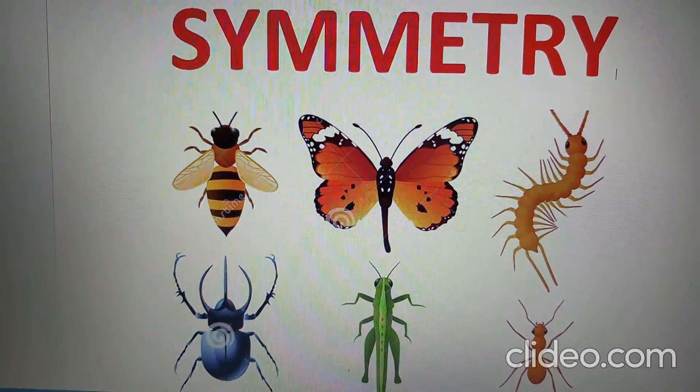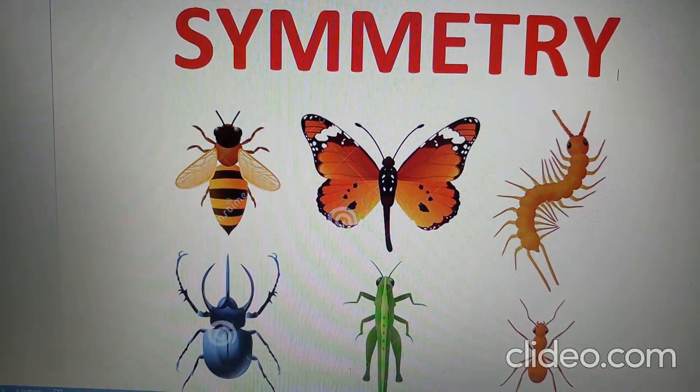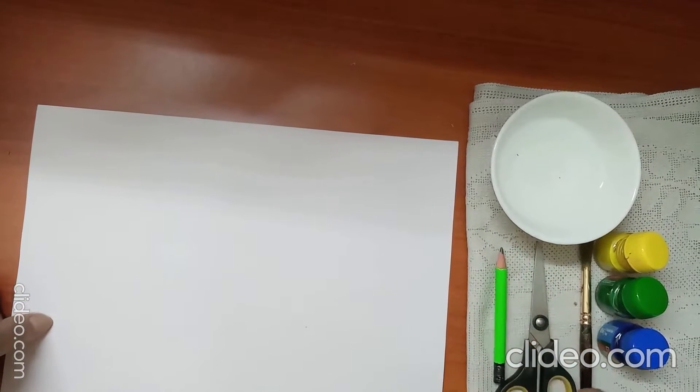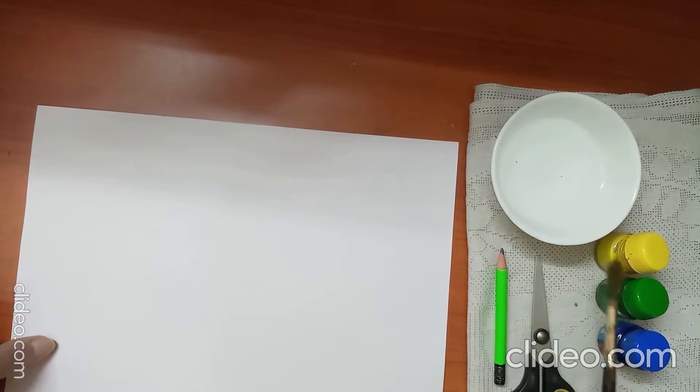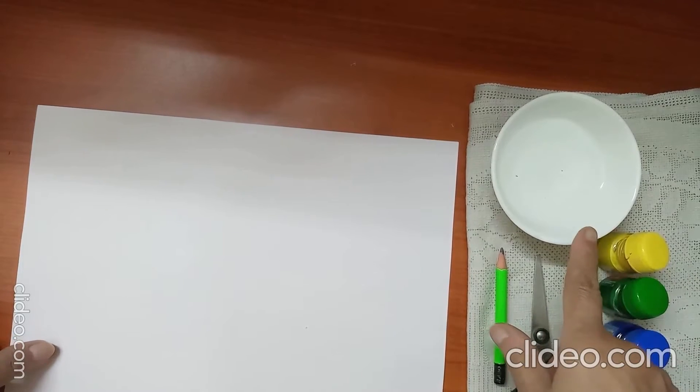Hello children, today we are going to do an activity through which we will understand the concept of symmetry. For this you require sheets of paper, pencil, scissors, paint brush, poster colors and water in a dish.